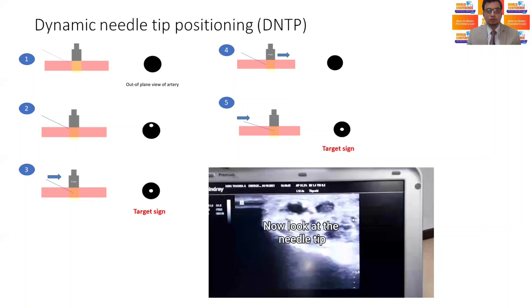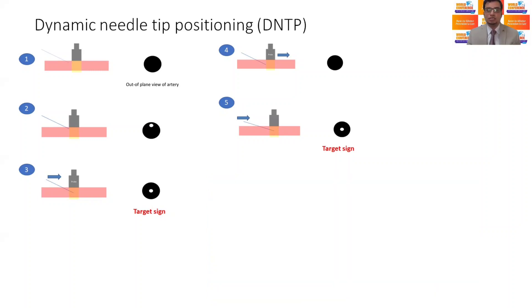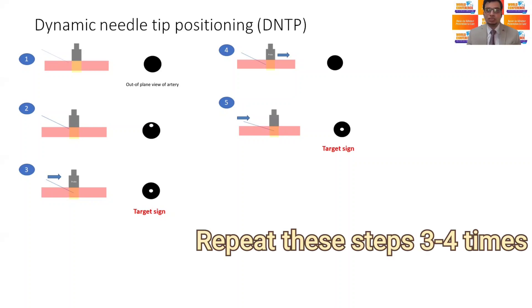Then the probe is moved 1-2 mm away from the insertion point until the tip of the needle just disappears from the screen. Then we advance the needle and catheter until the tip of the needle is just seen again, and these steps are repeated for about 3-4 times to ensure the catheter is 3-4 mm inside the arterial lumen and not just the needle.